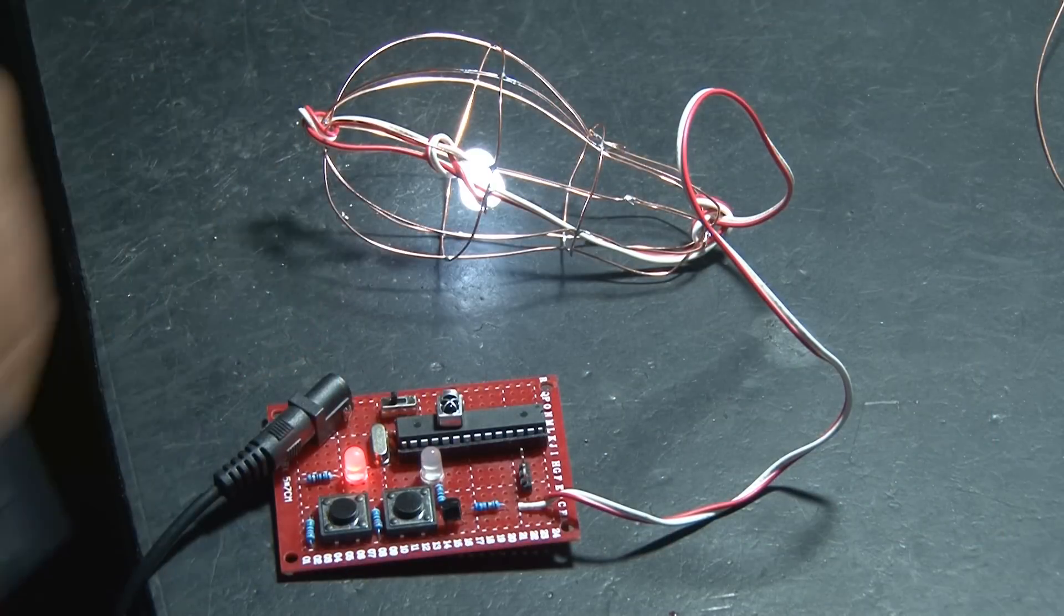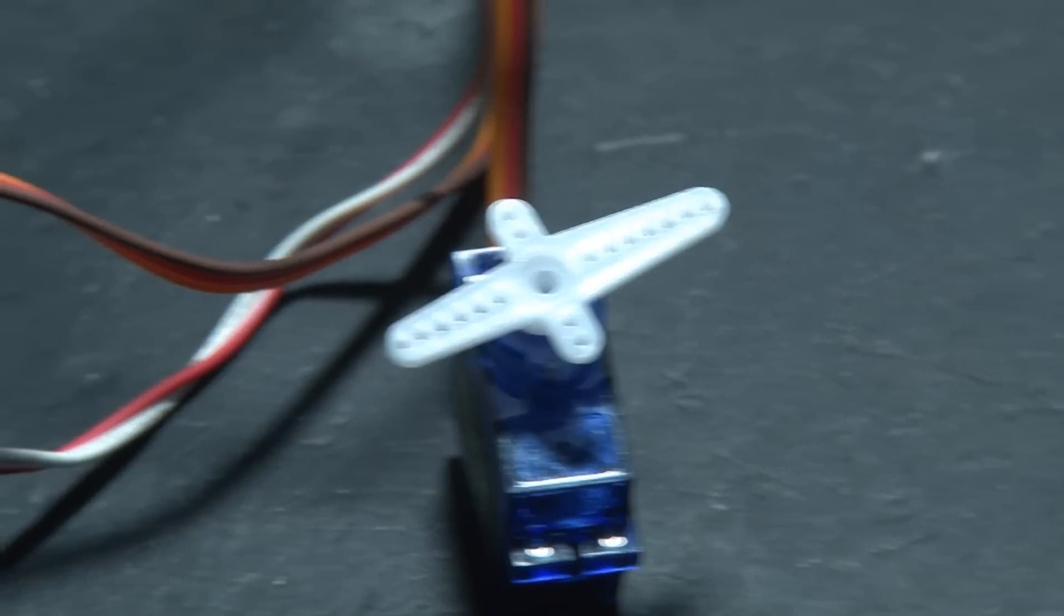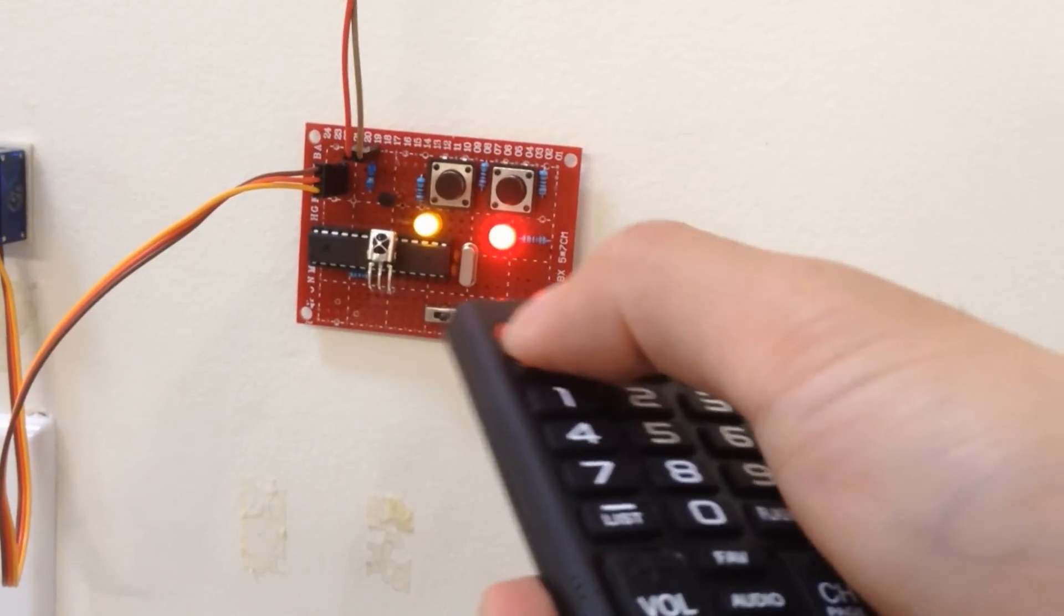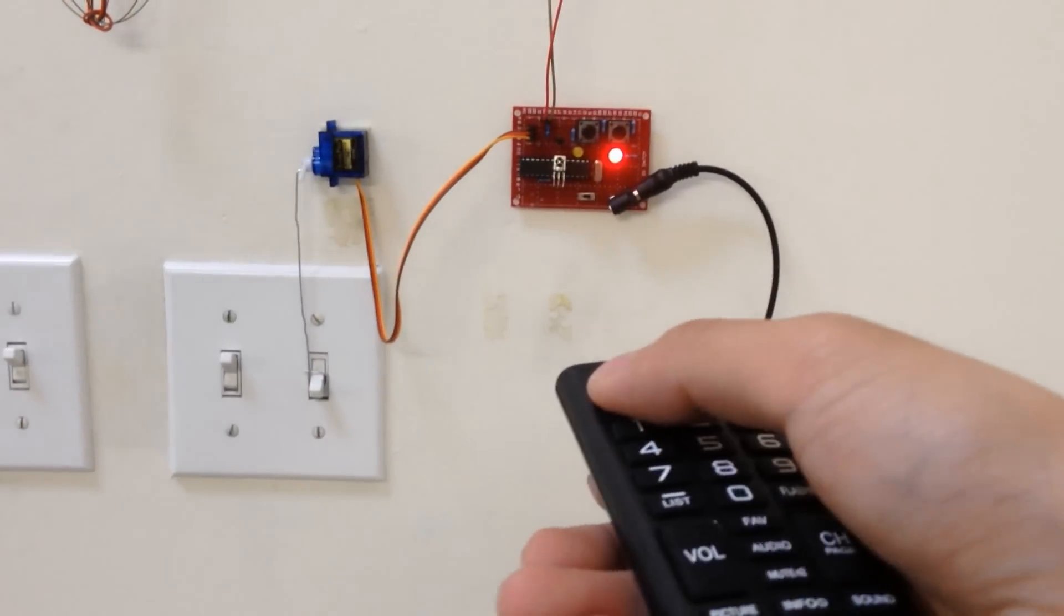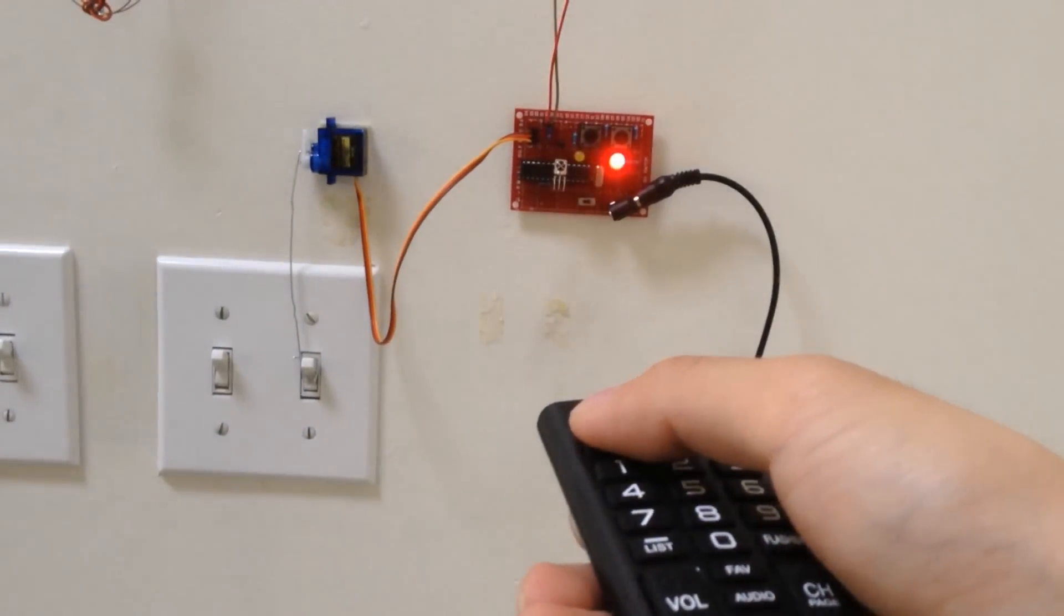You can use that remote to light up our LED, but that's not all it does. The kit comes with a small servo motor that you can hook up to our infrared thingy, program a remote to work with that, and with the use of a paper clip and some creative engineering, you can use it to turn on and off your light switch.